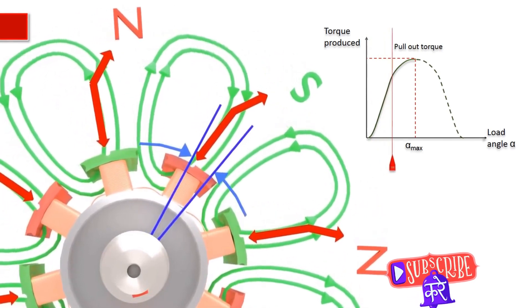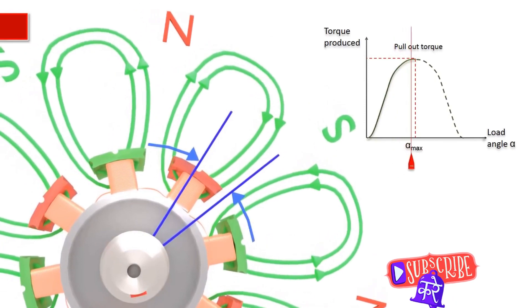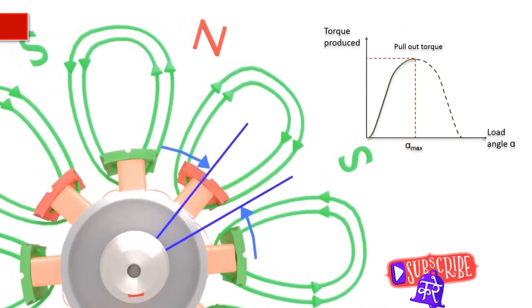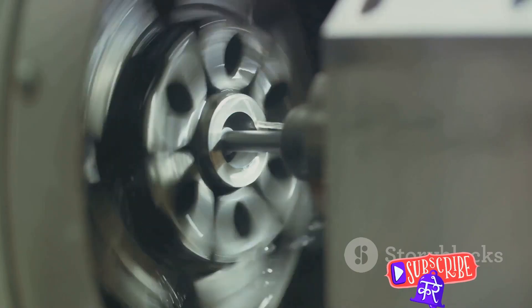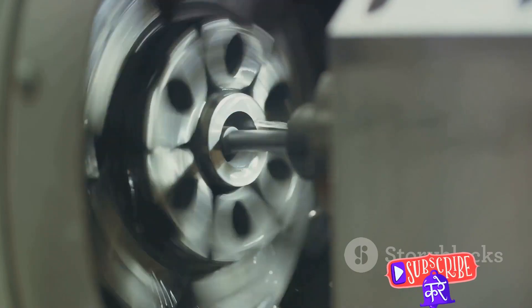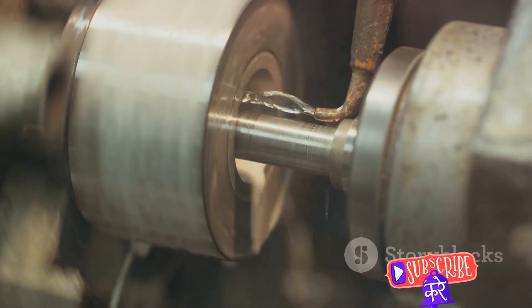Once the motor is up to speed, the slip disappears, and the rotor once again dances in perfect sync with the magnetic field. So with all these components working in harmony, the synchronous motor spins in perfect harmony with the AC frequency, making it a reliable precision tool.